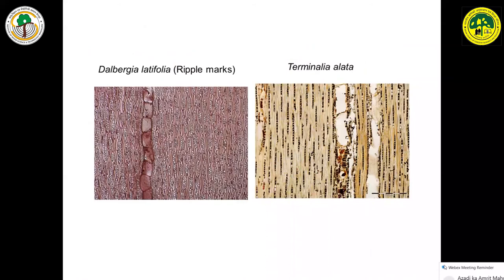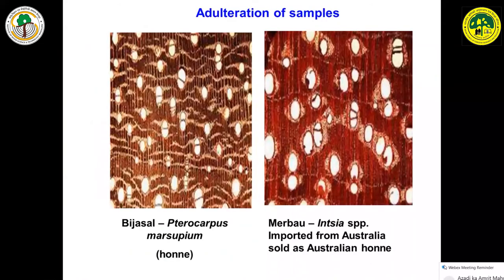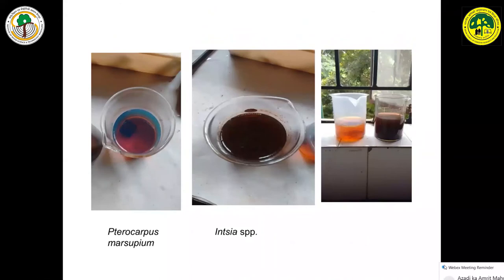In Albizzia lebbeck, ripple marks are present, whereas in Terminalia they are absent, and the cross-section structure is also different. Nowadays, Merbau (Intsia species) is imported from Australia and sold as 'Australian Honne' in the Indian market. Since Pterocarpus marsupium is not available, traders sell Intsia species Merbau in the name of Honne. The difference between the two is that Bijasol shows fluorescence when boiled, while Intsia shows no difference — just a dark brown color.